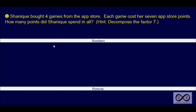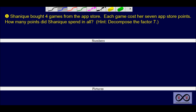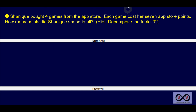First sentence: Shanique bought four games from the App Store. Did you hear some math information? If you were thinking four games would be important, good for you — you're right. So she bought four games. Next sentence: each game cost her seven App Store points. Each game cost seven, and there's another important number, this time in word form — seven App Store points. So each game costs seven App Store points. Important information.